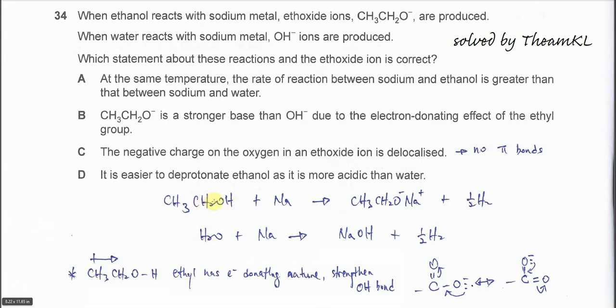From here, we know that ethanol has ethyl groups. This ethyl group has electron-donating nature. It will strengthen the OH bond here. So it means the OH bond is relatively harder to break.